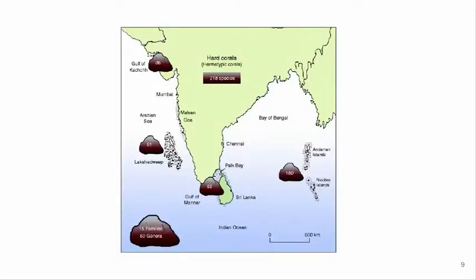In India, you can find coral reefs in the Gulf of Kutch, Lakshadweep, the Andaman and Nicobar Islands, and the Gulf of Mannar. In Andaman and Nicobar, you can see some of the world's most diversified coral reefs — you cannot find such coral reefs anywhere else in the world. That's why sea diving is much preferred whenever you visit the Andaman and Nicobar Islands. The coral reefs there are the major speciality of those islands.